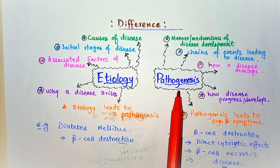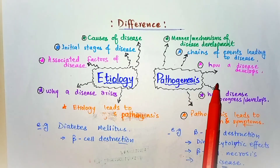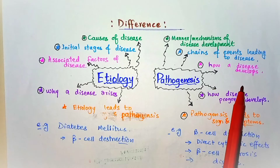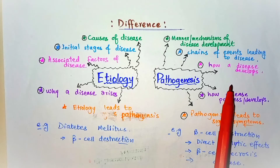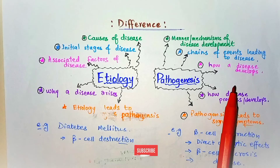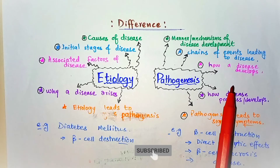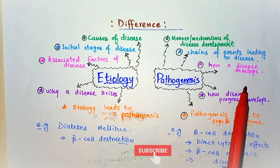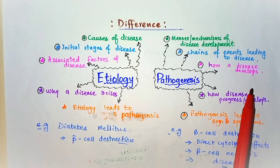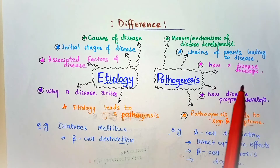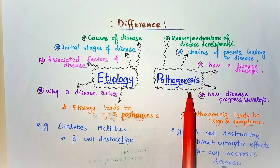In pathogenesis, we study how a disease develops — the processes and procedures involved. This includes the structural and functional changes in the body at the cellular and molecular level that give rise to the specific functional and structural abnormalities that characterize any particular disease.